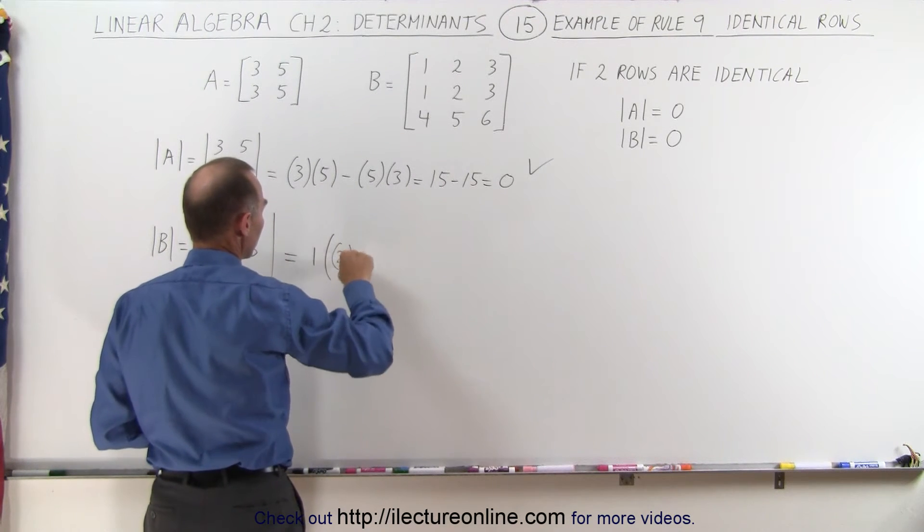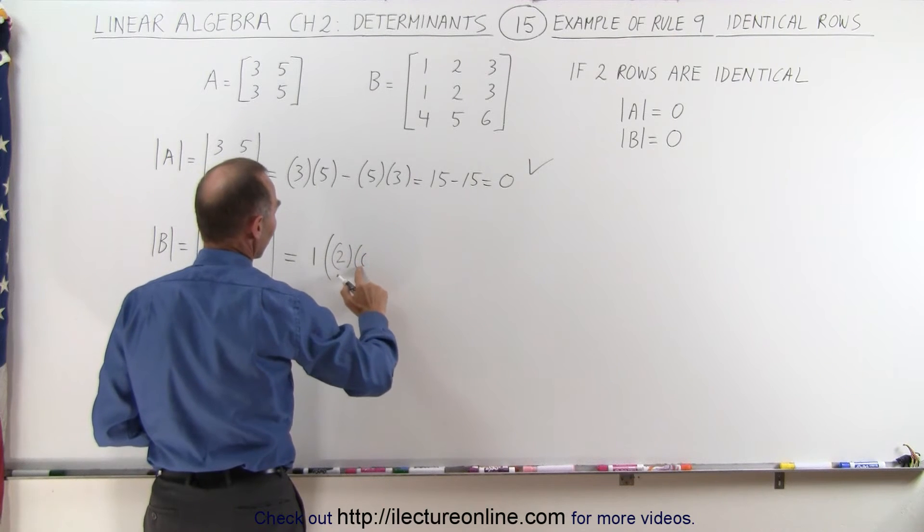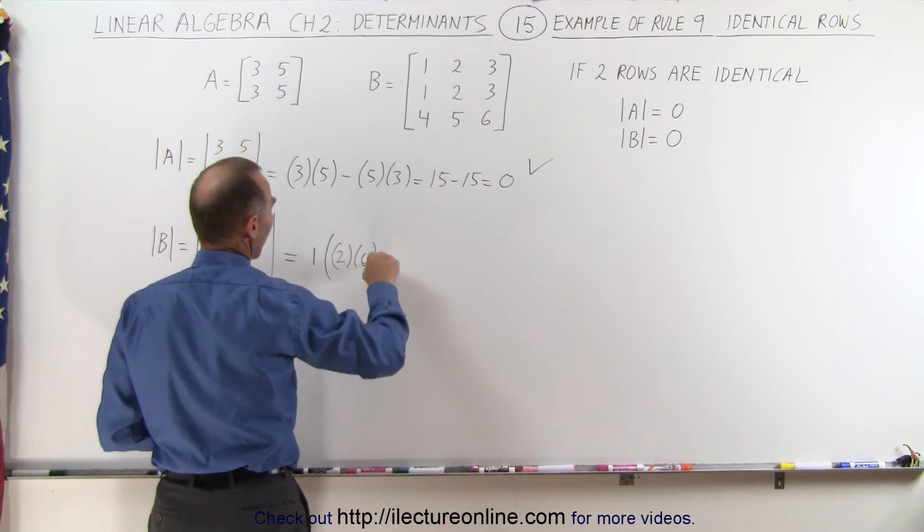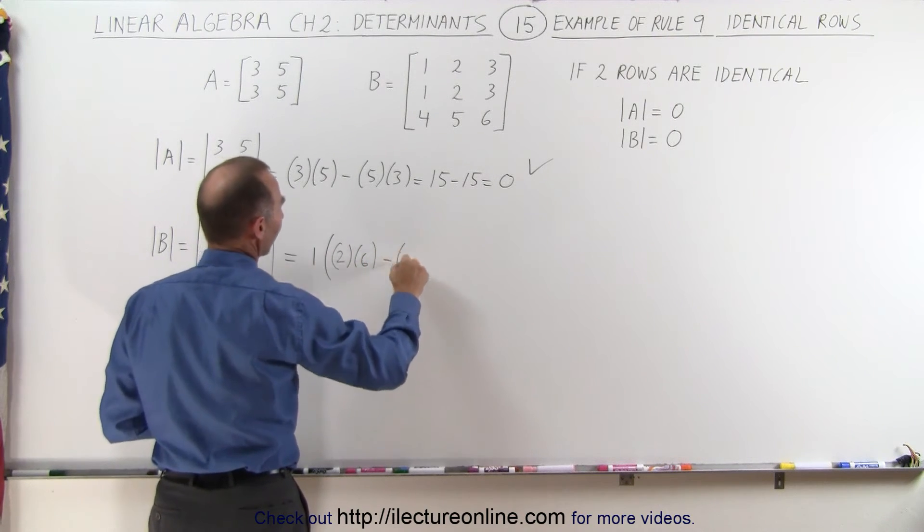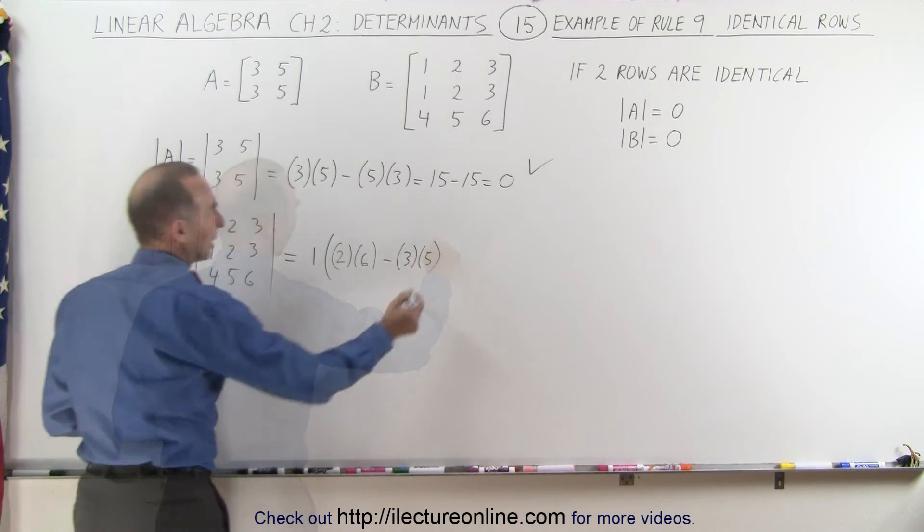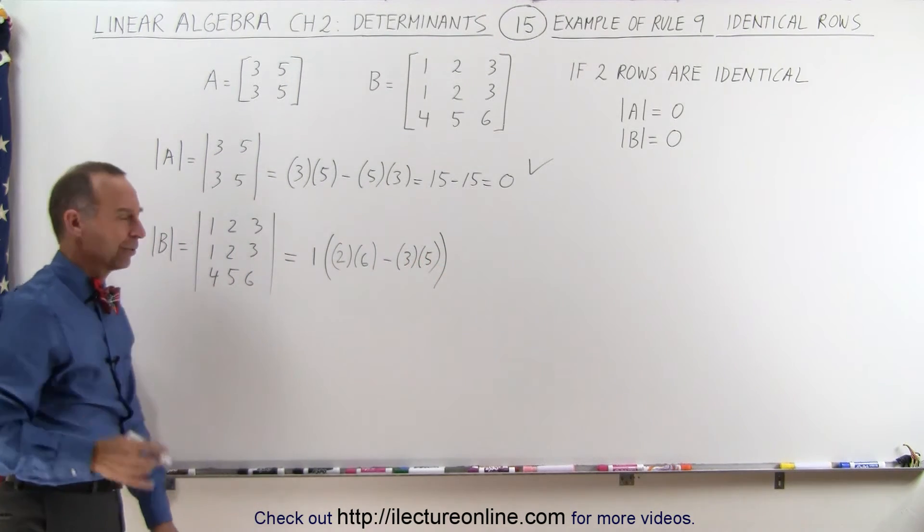That means 2 times 6 minus 3 times 5, and we need the closing parentheses. I keep forgetting to do that, don't I?